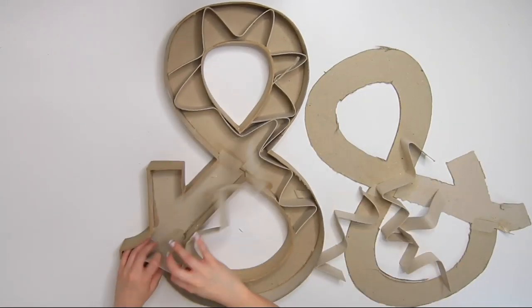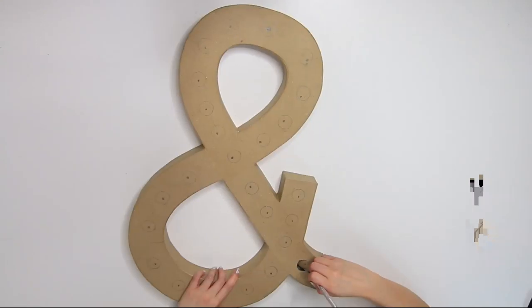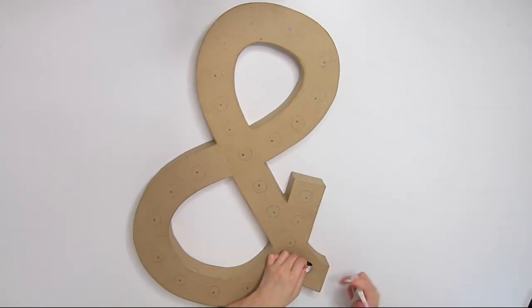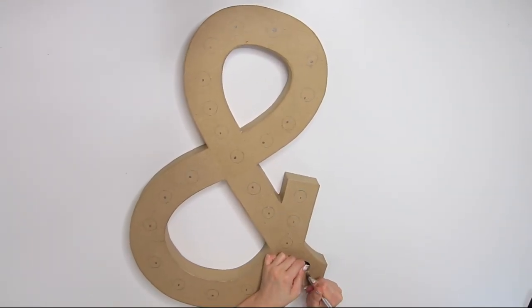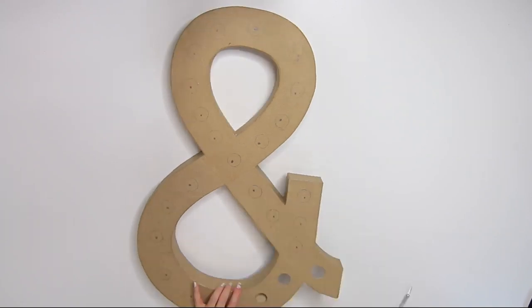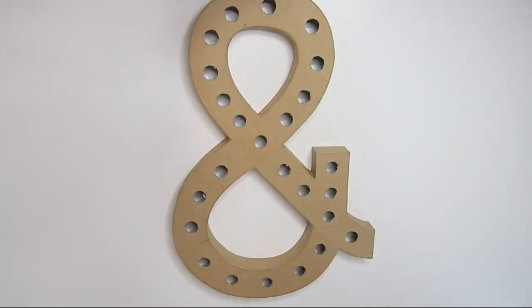Once you did that, next you're going to flip it over and cut out the circles with an exacto knife. This took me a while to do, because I needed to avoid cutting the hole too big or too small.